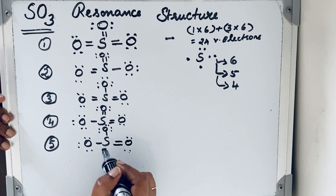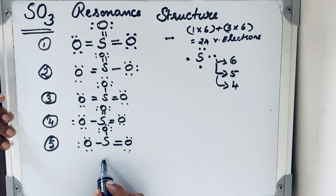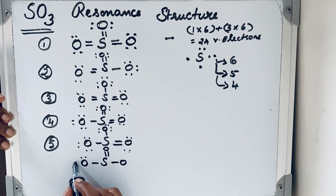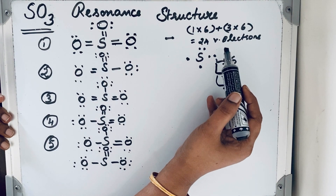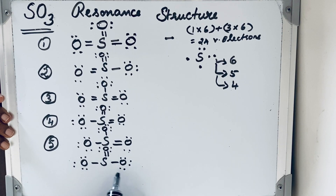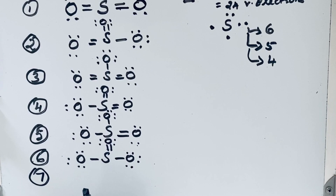For the sixth resonating structure, we place the double bond on a different oxygen — the top oxygen — giving it a double bond while the other two remain single bonds. Verifying: 2, 4, 6, 8, 10, 12, 14, 16, 18, 20, 22, 24 — 24 valence electrons are present. Sulfur has an octet configuration here too, which is acceptable for an expanded octet element.